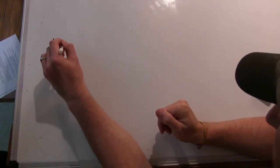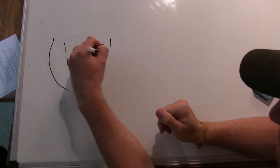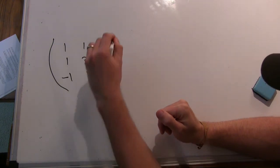The matrix is... The first row is 1, 1, minus 1. Then 1, 3, 1. And then minus 1, 1, 3.